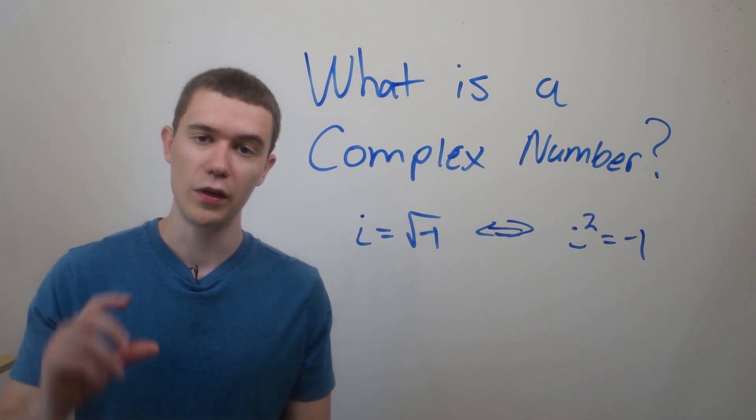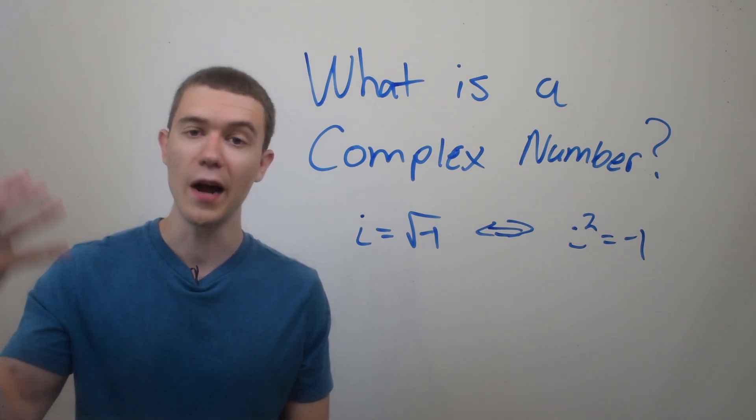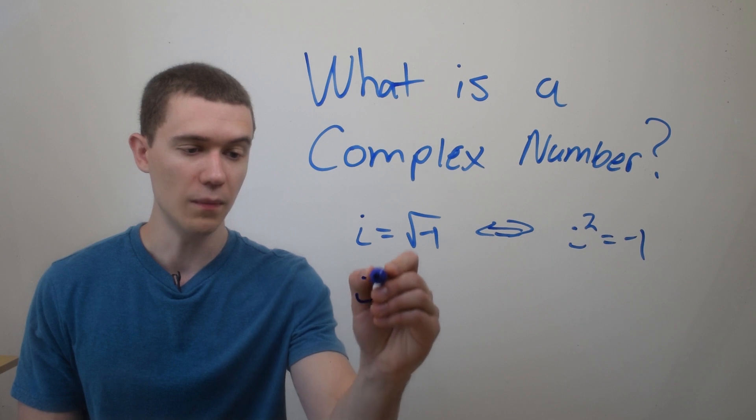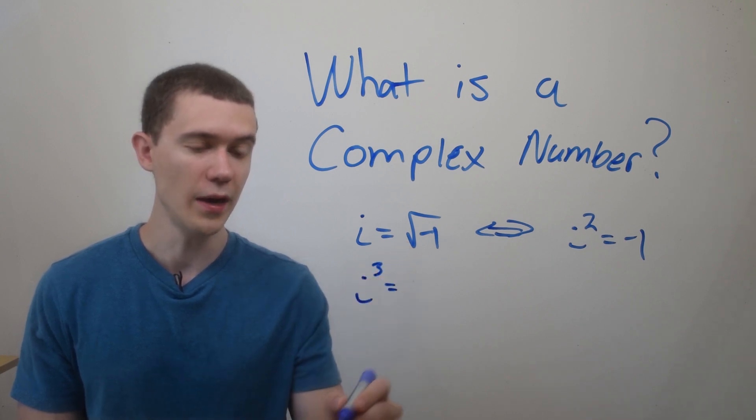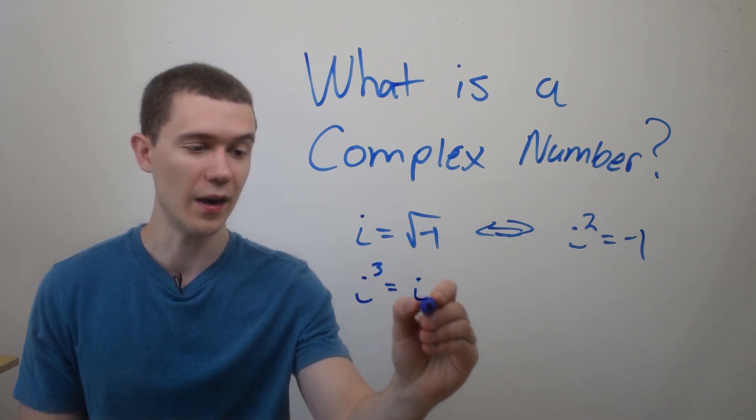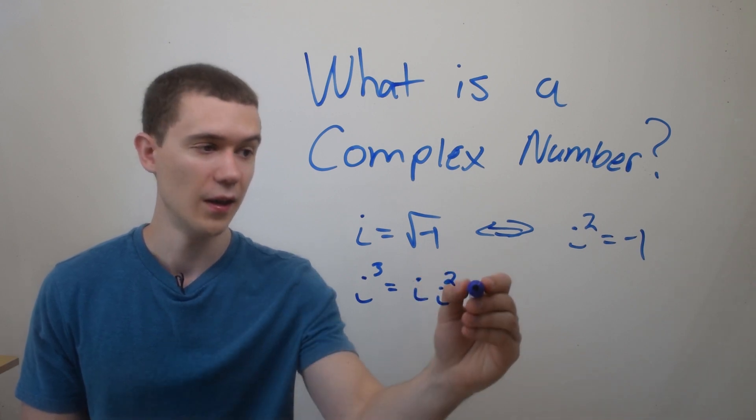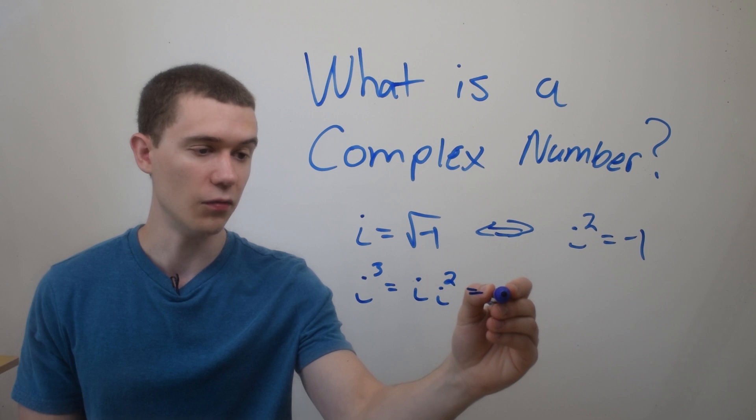What we can do with this is see what higher powers of i are. We already know that i squared is negative one. What would i cubed be? Well, i cubed is the same as i times i squared, using properties of exponents. And we just said i squared is negative one, so i cubed is negative i.